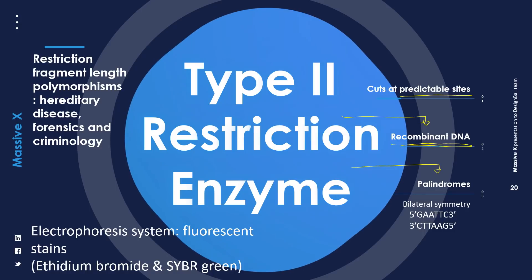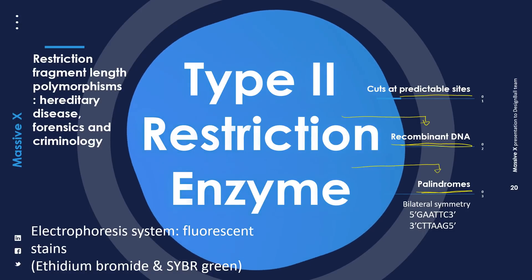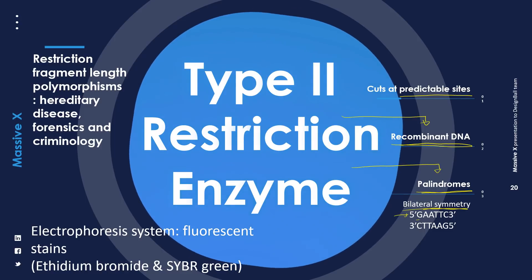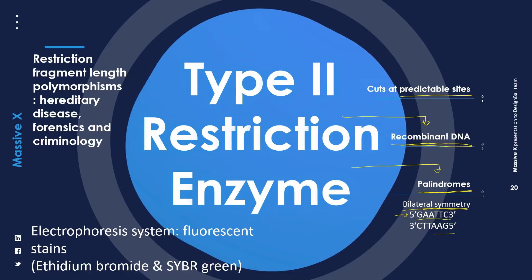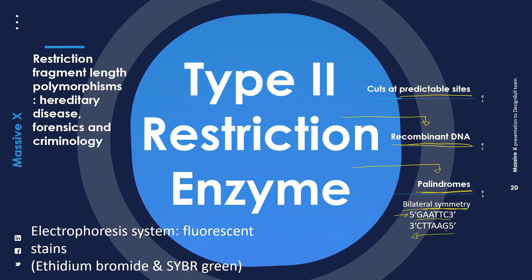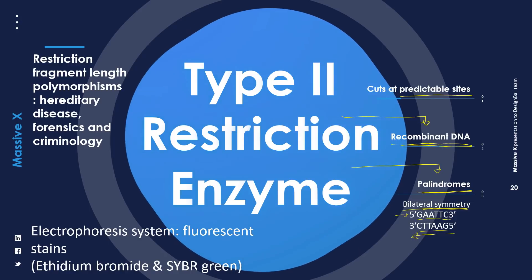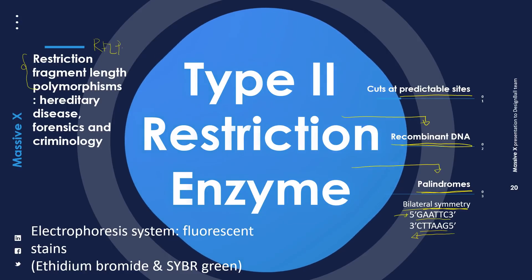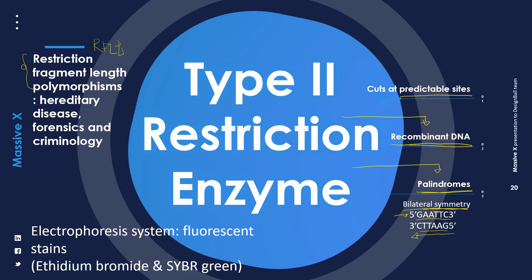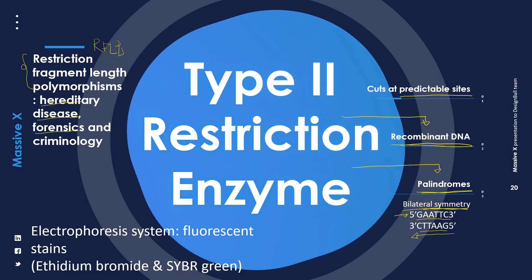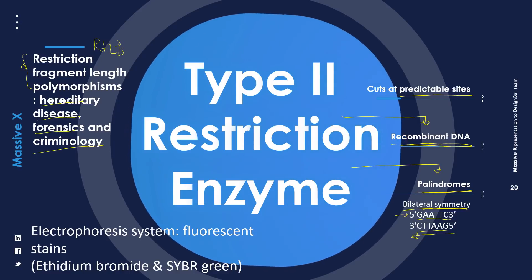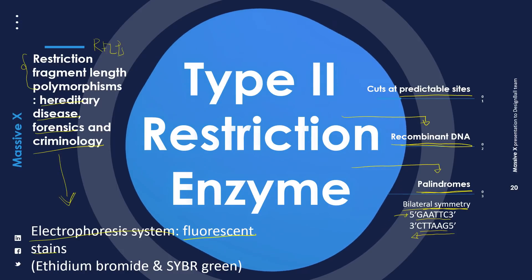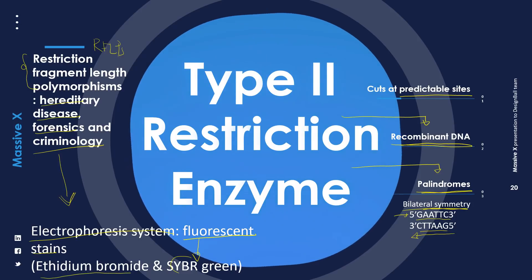The sequences recognized by type 2 restriction enzymes are palindromes — meaning bilateral symmetry. If from 5 prime to 3 prime the sequence is GAATTC, then on the other strand from 5 prime to 3 prime it would also be GAATTC. In diagnostics, restriction fragment length polymorphisms, or RFLPs, are used for the diagnosis and screening of hereditary diseases, as well as in forensics and criminology. The fragments may be viewed using fluorescent stains in electrophoresis systems, such as ethidium bromide and SYBR green.